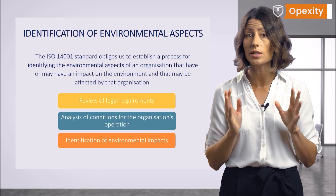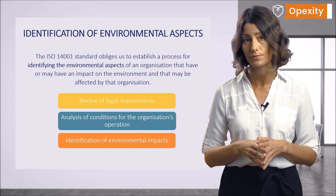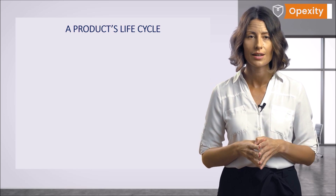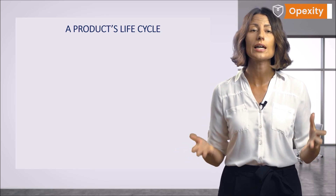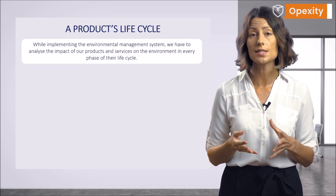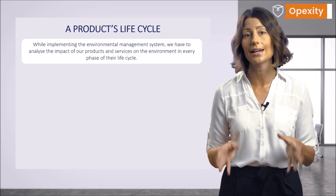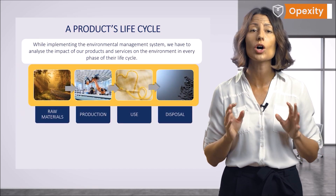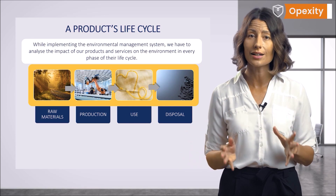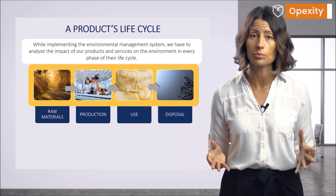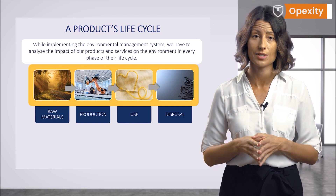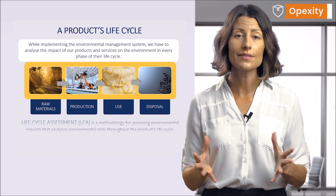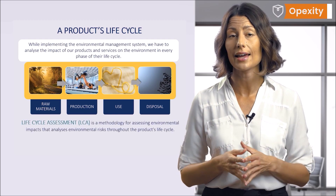At all times, consider the life cycle of the product. The concept of life cycle of the product was mentioned in the previous lesson. While implementing the environmental management system, we can't think about only what is here and now — we must focus on our products and services in a comprehensive way. This means that we should analyze the environmental impact of our products and services in every phase of their life cycle. This is what Life Cycle Assessment is for.